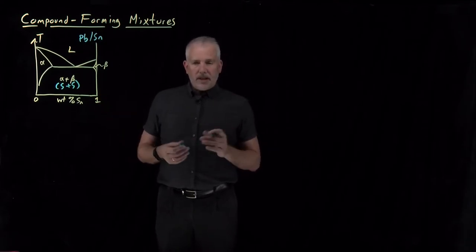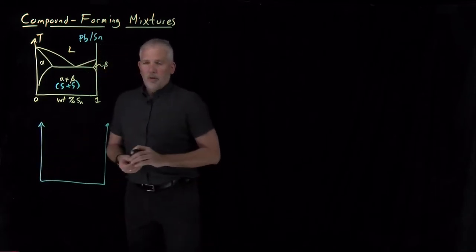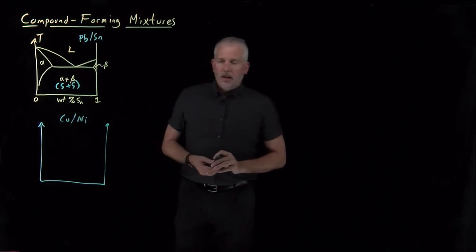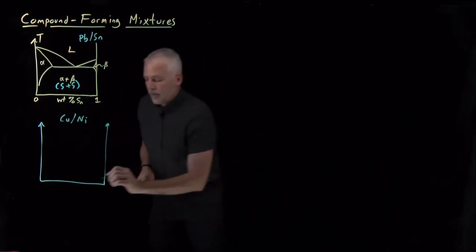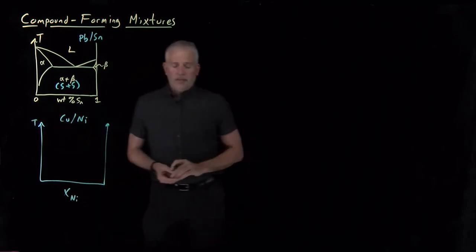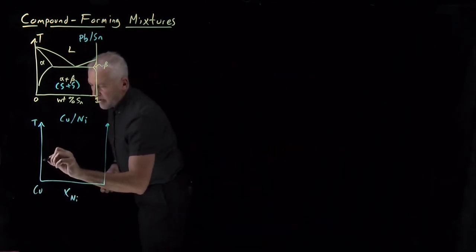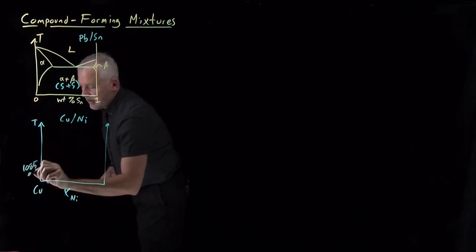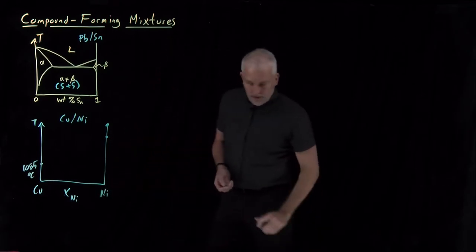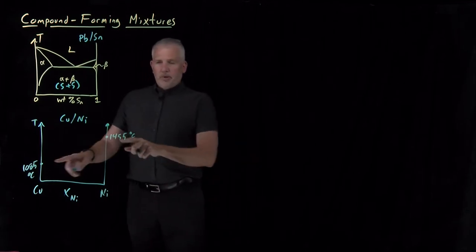Metals don't always behave like that. Sometimes I can combine two metals in any arbitrary composition I want, even in the solid phase. What that would look like for an alloy-forming pair of metals — in this case, if I combine copper and nickel — those two metals I can combine in any combination I want. If I draw a mole fraction of nickel versus temperature composition phase diagram, pure copper melts at a little above 1000 degrees Celsius.